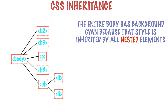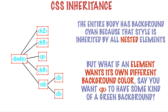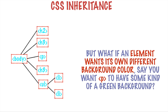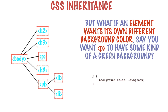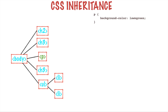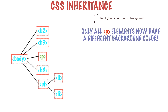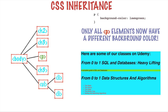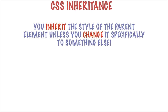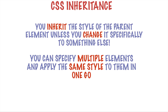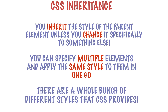Coming back to our original example: the entire body had background color cyan because that style was inherited by all nested elements. What happens if an element wants its own specific background color? You can override any inherited property — simply create a style which applies to, say, the paragraph element, which sets the background color to lawn green. Now only the paragraph elements will have a different background color. For any HTML element, you can create a specific style and that style will override the parent style. You inherit the style of your parent element unless you change something specifically. Remember also that you can apply multiple different styles to any given element; all of them will go ahead and apply to the element.